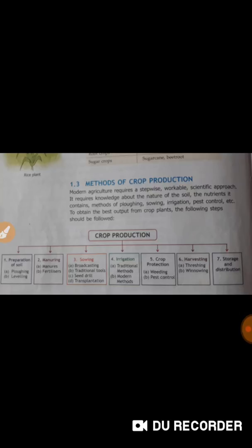After that we have harvesting. In harvesting, there is threshing, there is winnowing and the last step is storage and distribution.